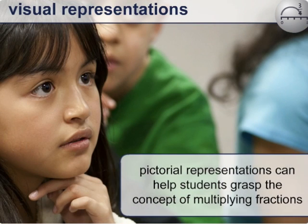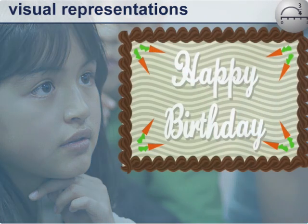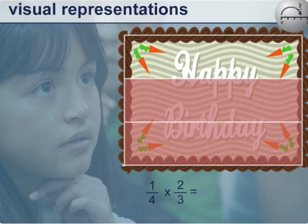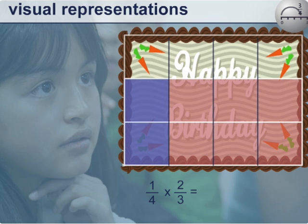Pictorial representations can help students grasp the concept of multiplying fractions. In this example, the challenge is to decide how much of a cake can be frosted with one-fourth of a cup of icing, if one cup of icing covers only two-thirds of the cake. A pictorial representation allows students to partition the cake from one whole to two-thirds to one-fourth of two-thirds — in short, to find a fraction of a fraction.